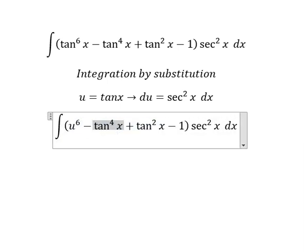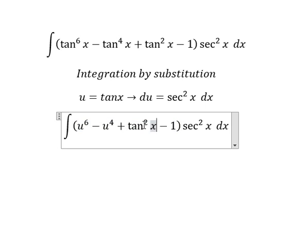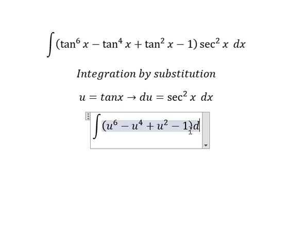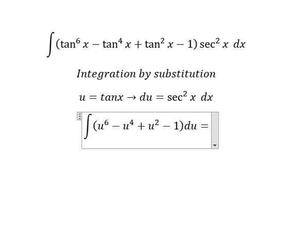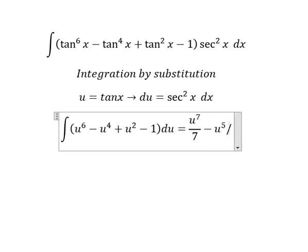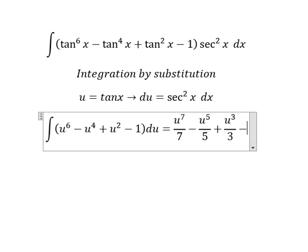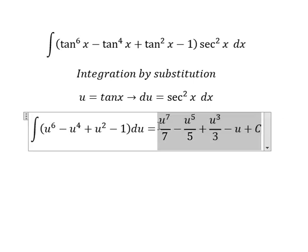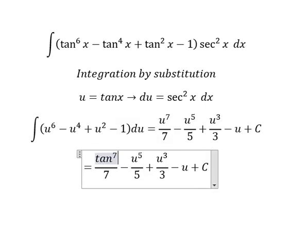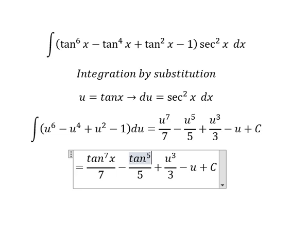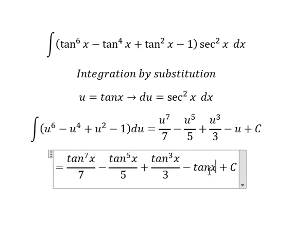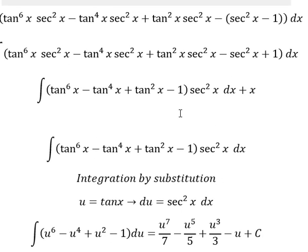Similar for this one, we change this for du. Now we have the final answer: u^7/7 - u^5/5 + u^3/3 - u + C, which equals tan^7(x)/7 - tan^5(x)/5 + tan^3(x)/3 - tan(x) + C.